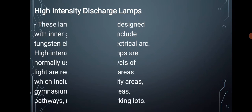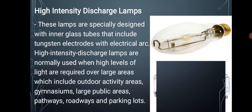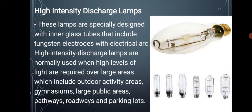Neon lamps are especially designed with inner glass tubes that include tungsten electrodes with electrical arc. Number eight: high intensity discharge lamps are normally used when high levels of light are required over large areas, which include outdoor activity areas, gymnasiums, large public areas, pathways, roadways, and parking lots. These lamps produce a large quantity of light compared to fluorescent and incandescent lamps.